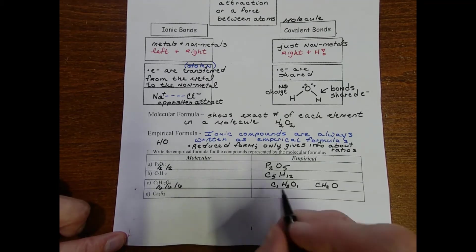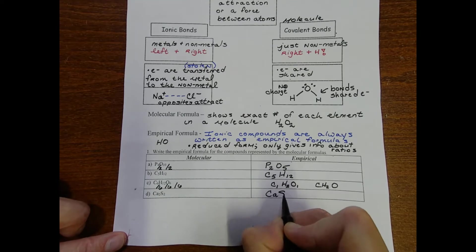Ca2S2 - both of those things can be divided by 2 and we're left with CaS.